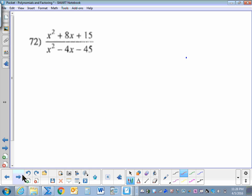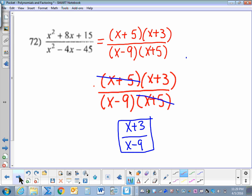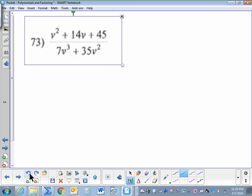Problem 72. Factor the numerator into two binomials, the denominator into two binomials, and eliminate top to bottom. Try 73.